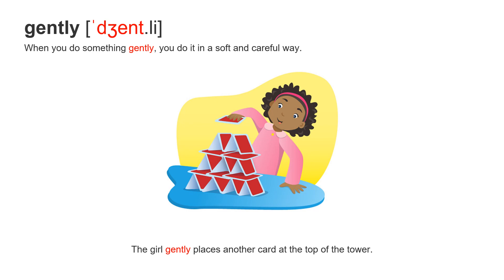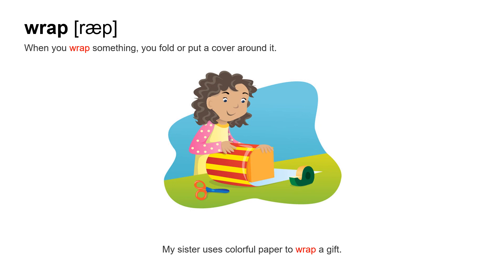Next word: gently. It has two syllables, accent on the first syllable. Note that the T does not make a big noise — say gently. When you do something gently, you do it in a soft and careful way. The girl gently places another card at the top of the tower. Gently.